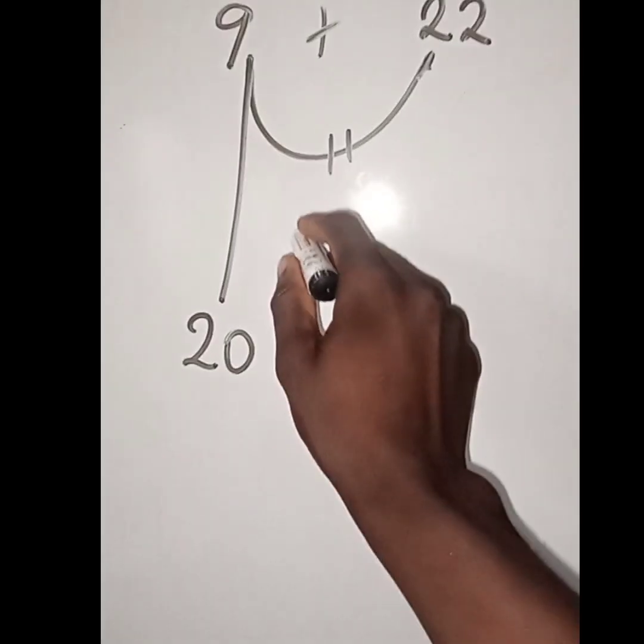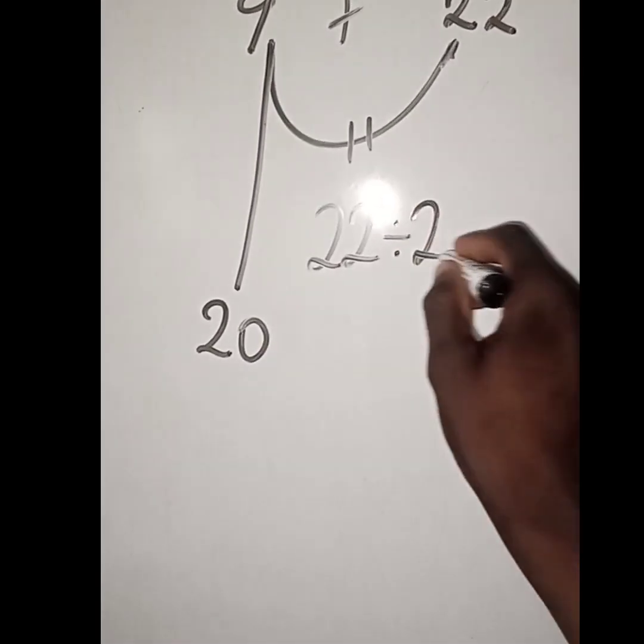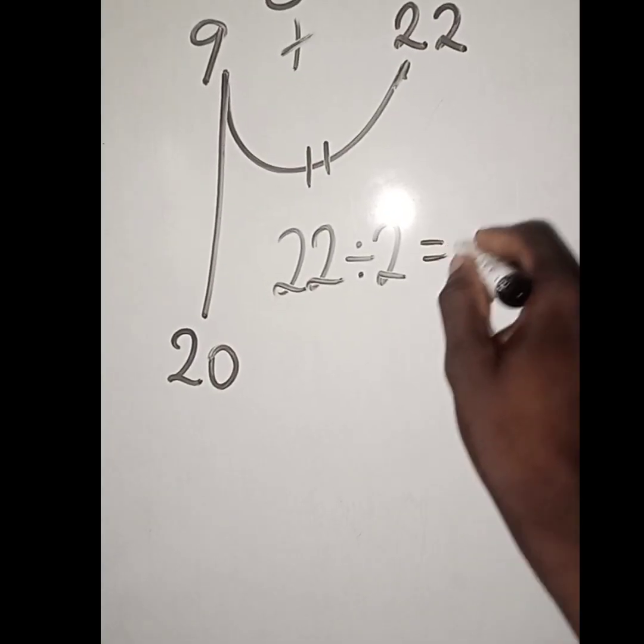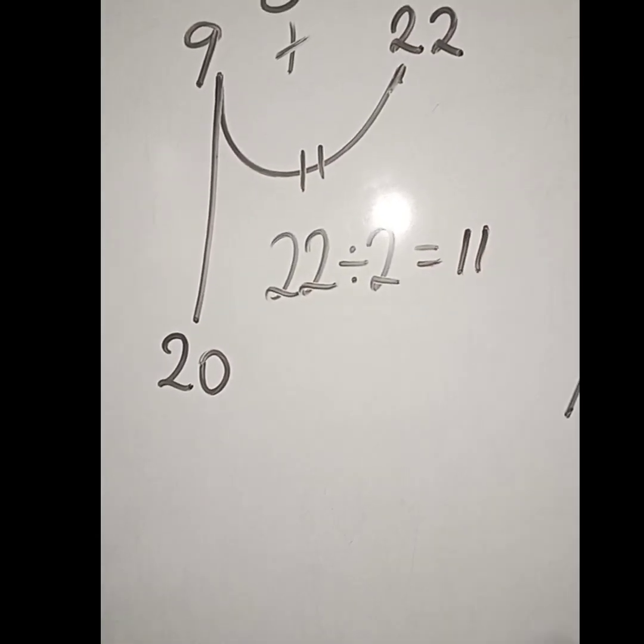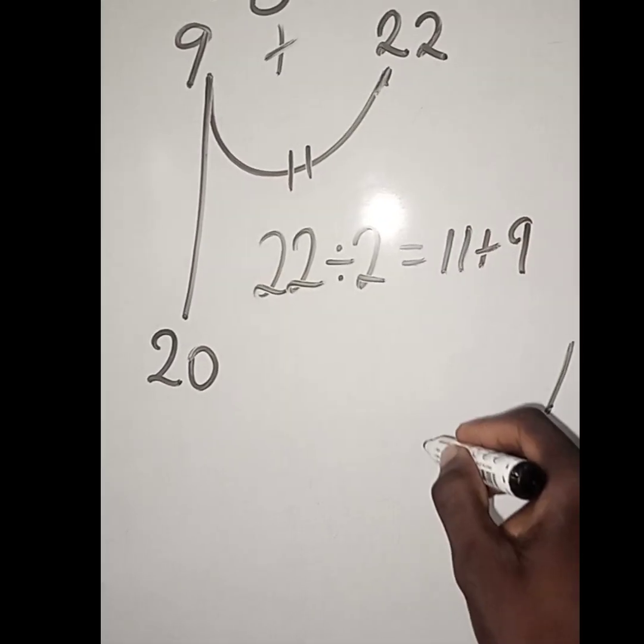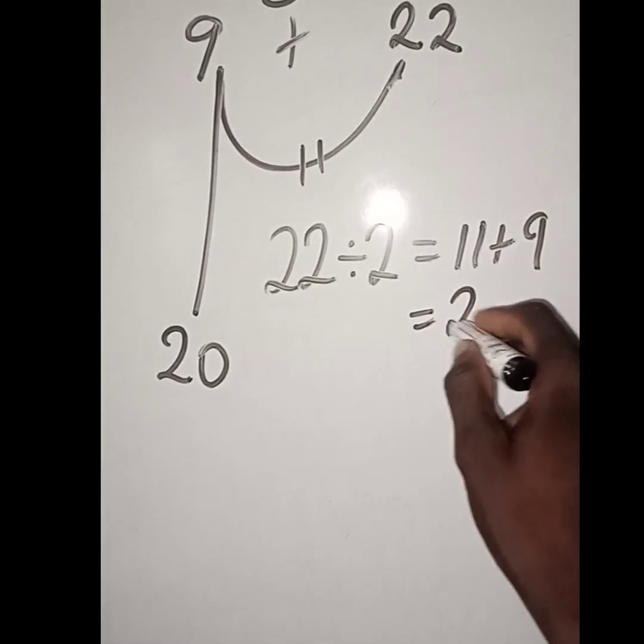So having 22, 22 divided by 2, the answer is 11. So 11 plus 9 will give us 20.